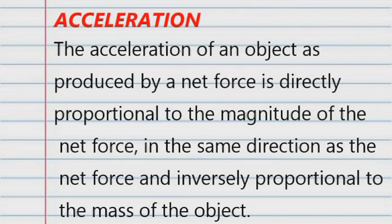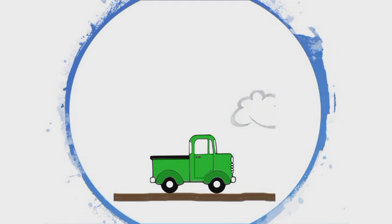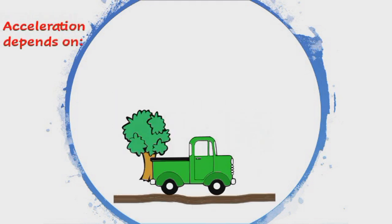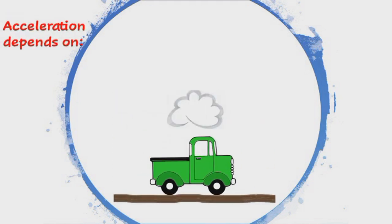Newton's second law of motion can be formally stated as: The acceleration of an object as produced by a net force is directly proportional to the magnitude of the net force in the same direction as the net force and inversely proportional to the mass of the object.